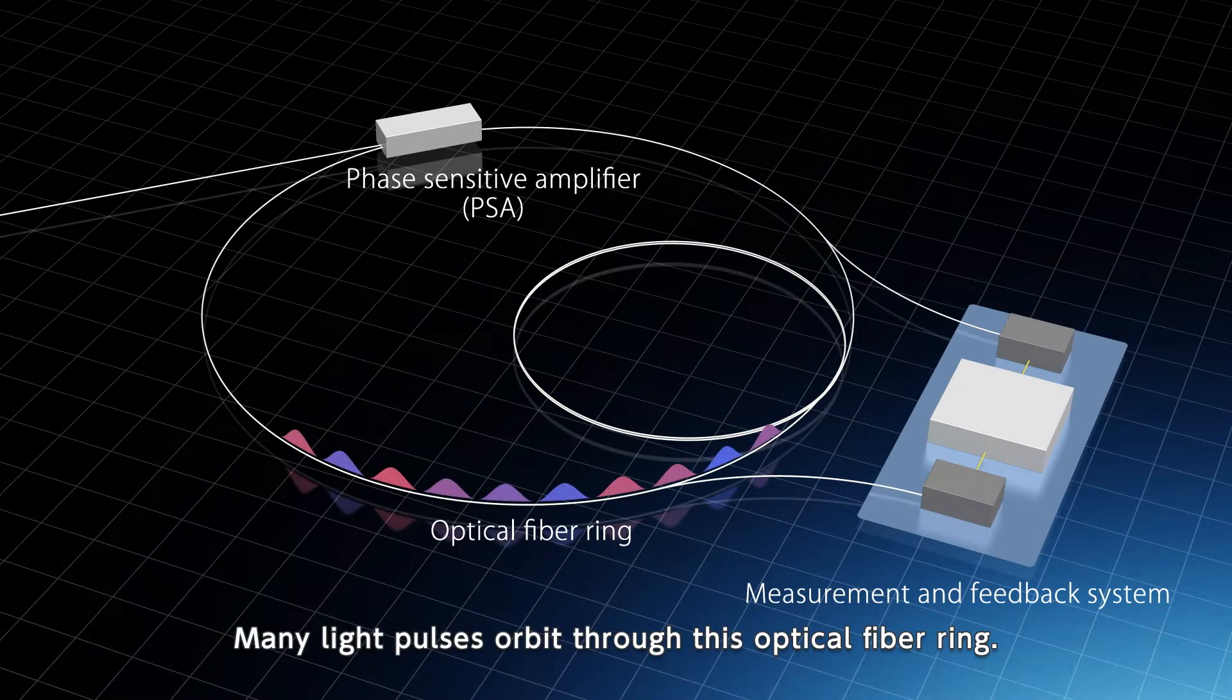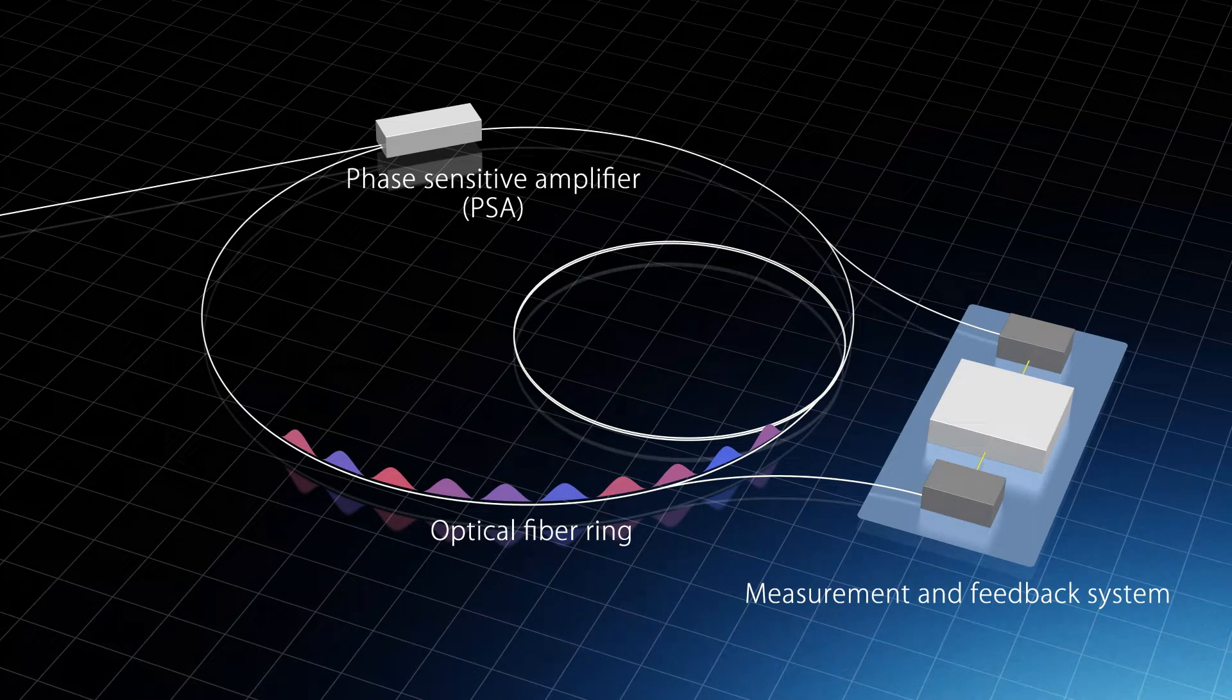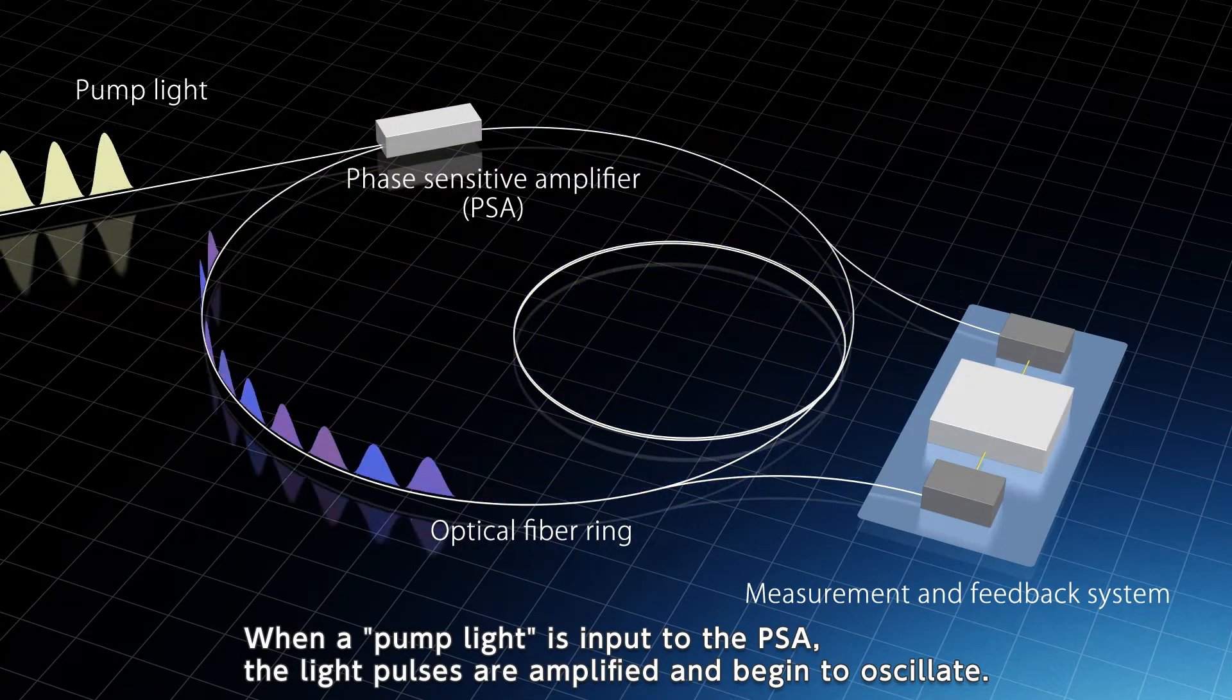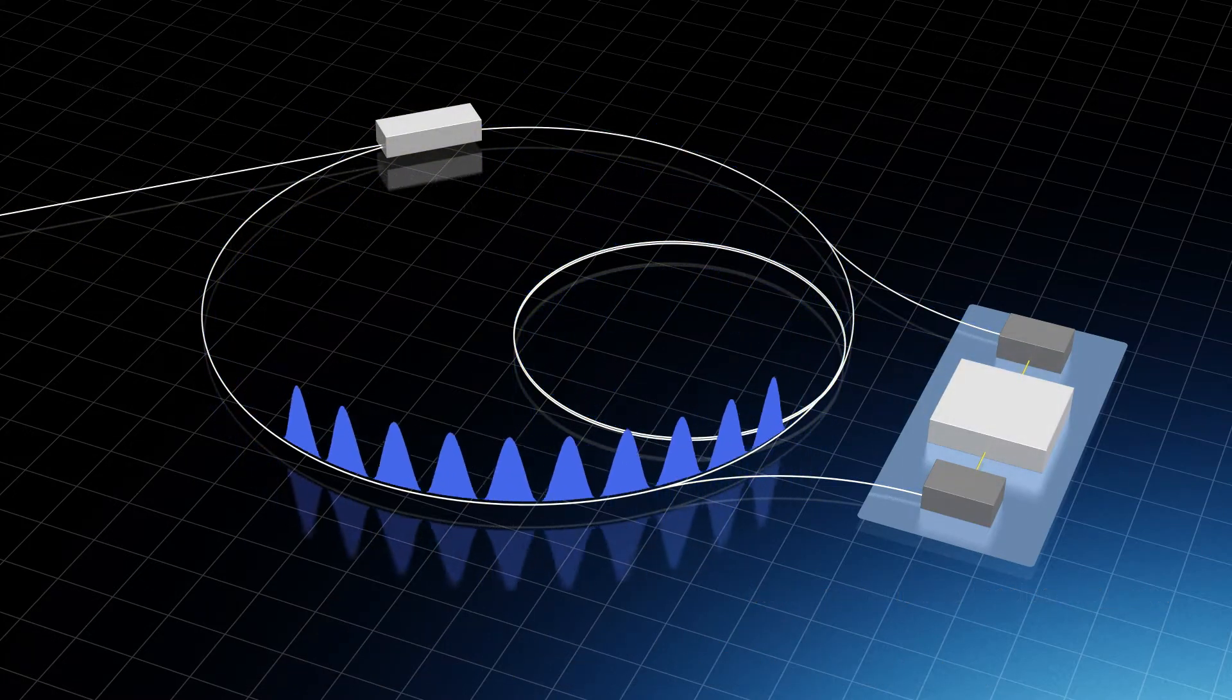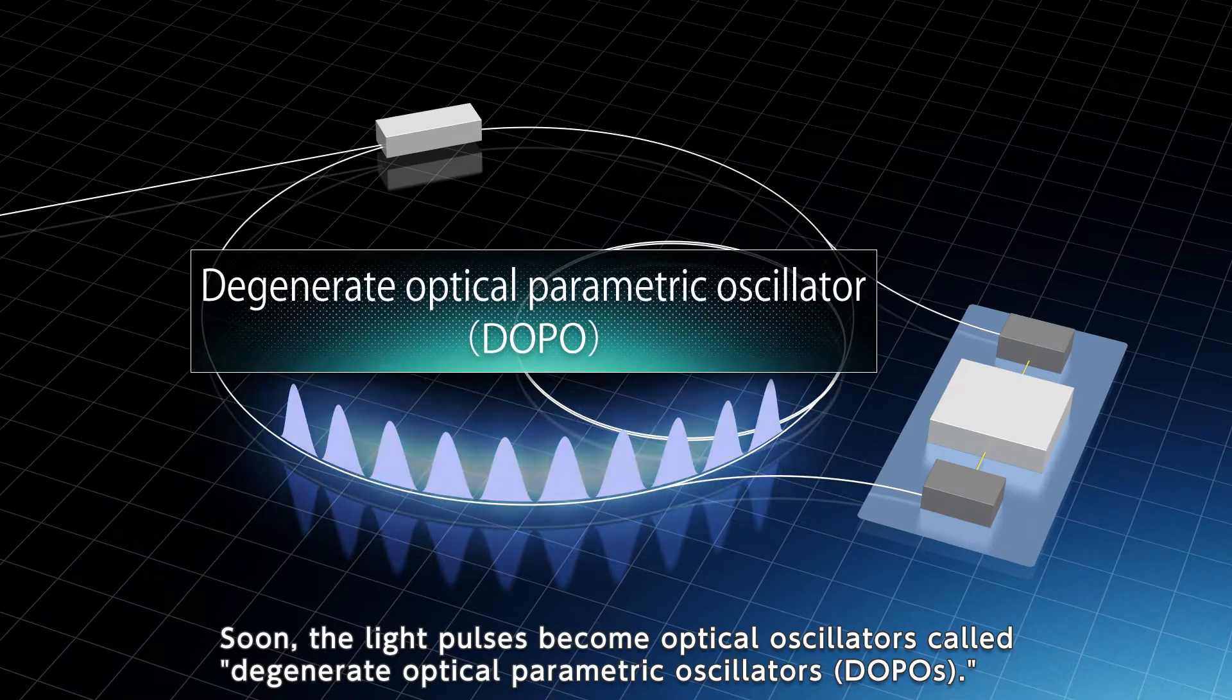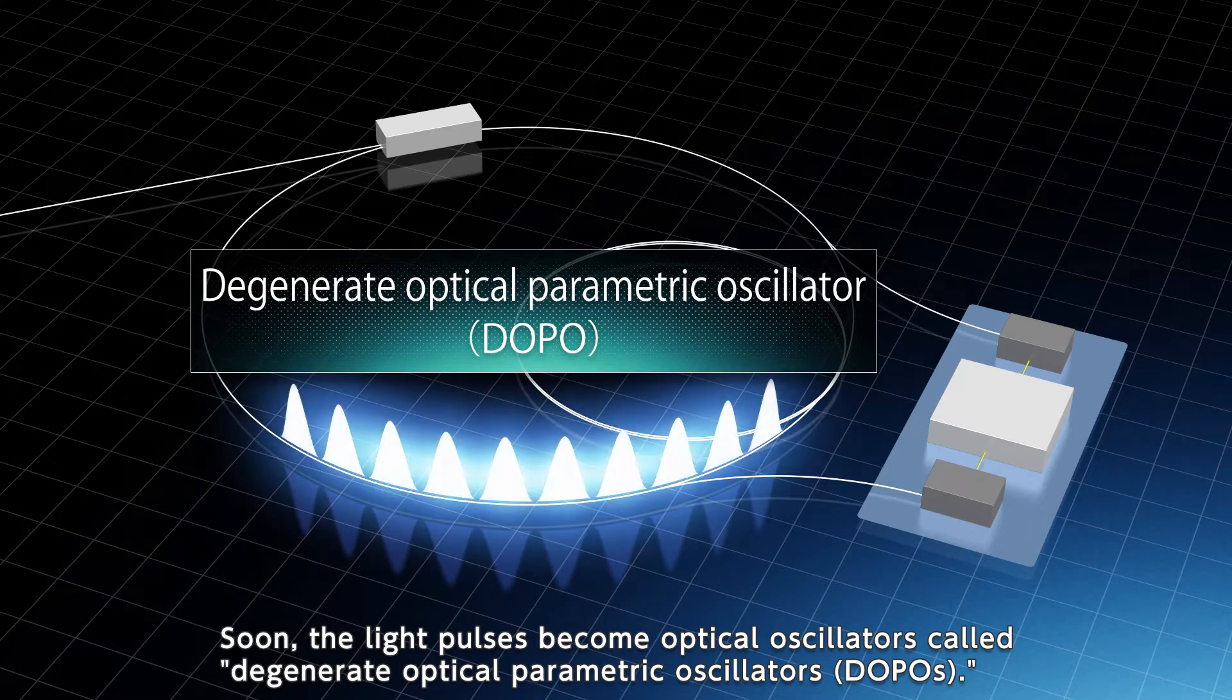Many light pulses orbit through this optical fiber ring. When a pump light is input to the PSA, the light pulses are amplified and begin to oscillate. Soon, the light pulses become optical oscillators called degenerate optical parametric oscillators.